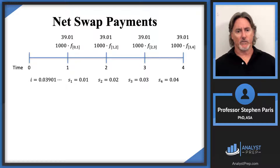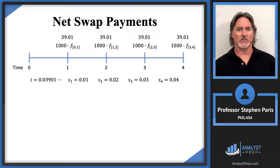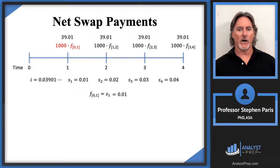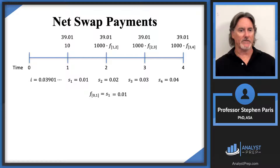The forward rate from time zero to time one is just the one-year spot rate of 0.01. The payment at time one is 1,000 times the forward rate from time zero to time one — that forward rate is 0.01 — so 1,000 times 0.01 gives you 10. A payment at time one of $10 is being swapped for a payment of $39.01.